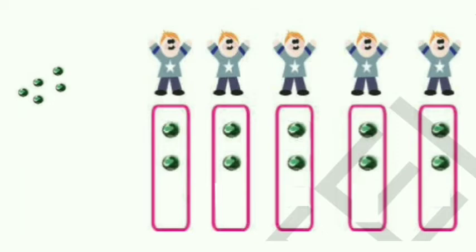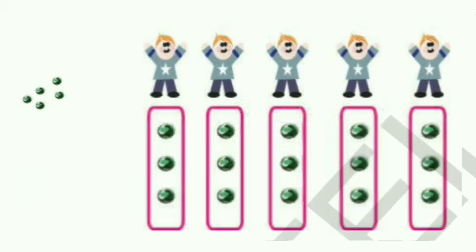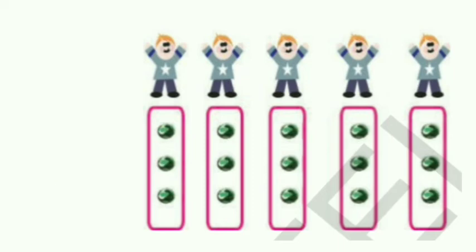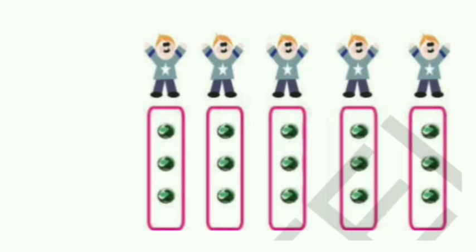Now children, let us take 5 more marbles and distribute them equally by giving 1 marble to each. Dear children, tell me how many marbles have we distributed? Very good — 5 marbles we distributed that time also. Then how many marbles remained now? We have no marbles remained here. 0 marbles.